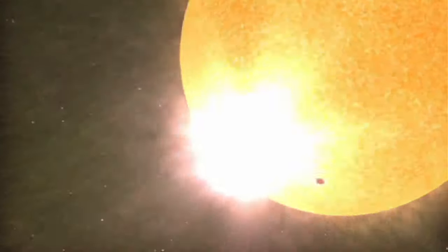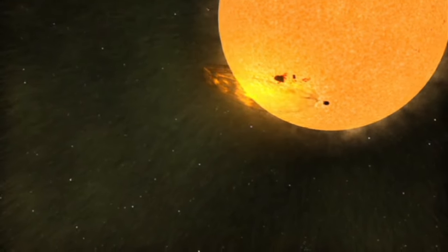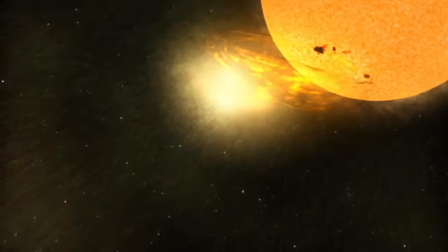During Solar Maximum, solar storms can occur several times per day, and sometimes they are aimed in the Earth's direction.